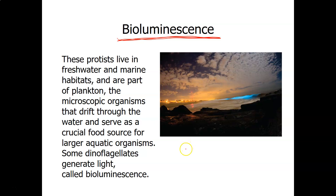There is a type of dinoflagellate that causes red tides, especially when ocean water is particularly warm. The dinoflagellates can overpopulate, and when they do they release a red toxin. Mollusks will eat it because they're consuming plankton — that's their diet. They're filter feeders, so clams and oysters consume the plankton.